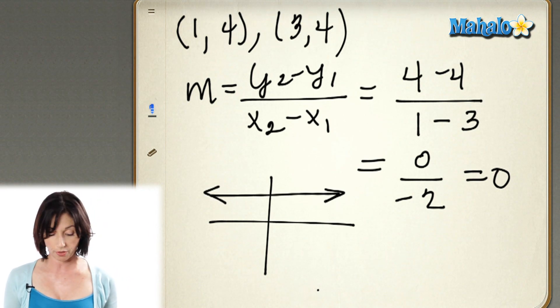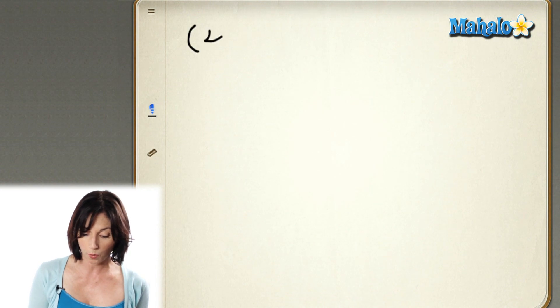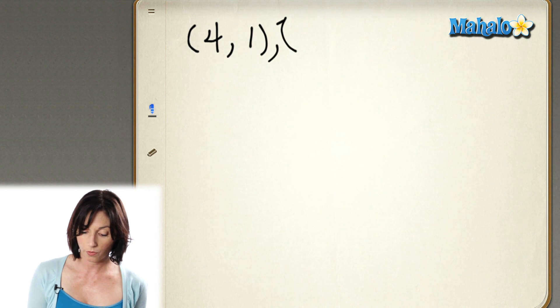So let's look at another example. Let's say we have the points (4, 1) and (4, 3).